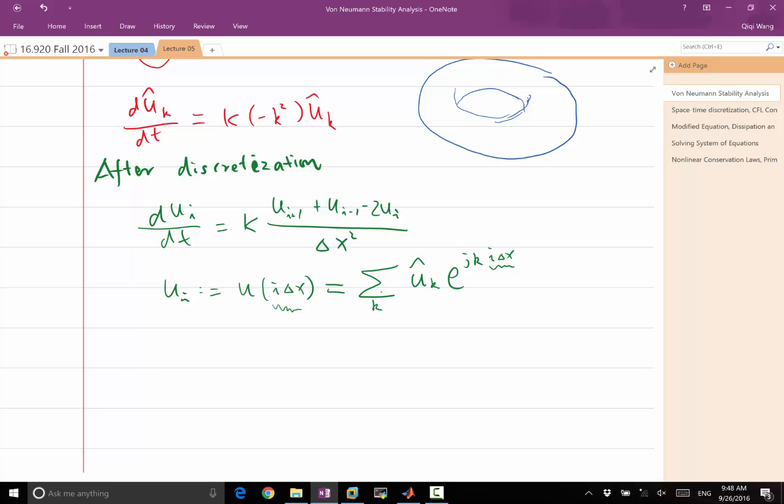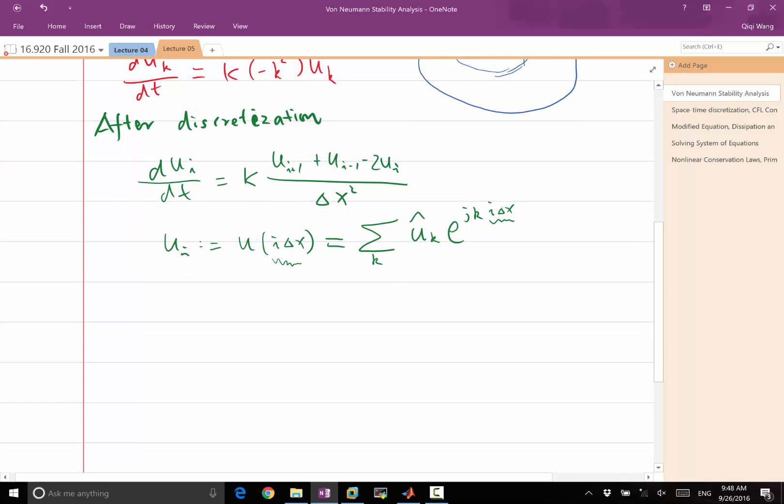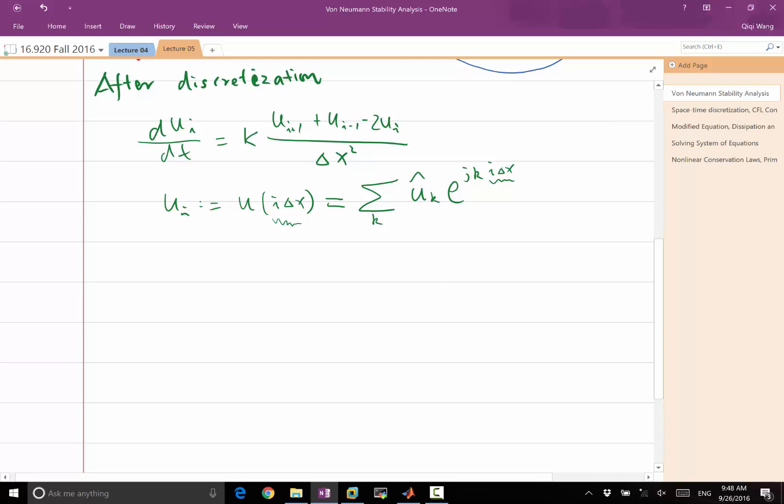So what does aliasing mean? Aliasing means that for a particular uk and a different uk, that is of a different k, the effect of this term is going to be exactly the same, represented on the discrete grid.